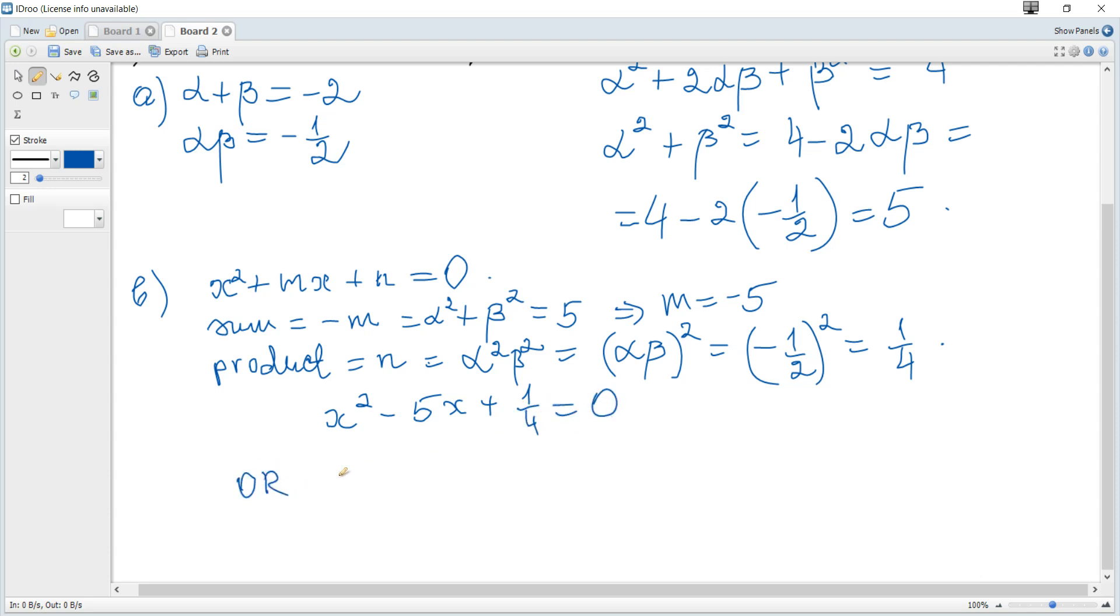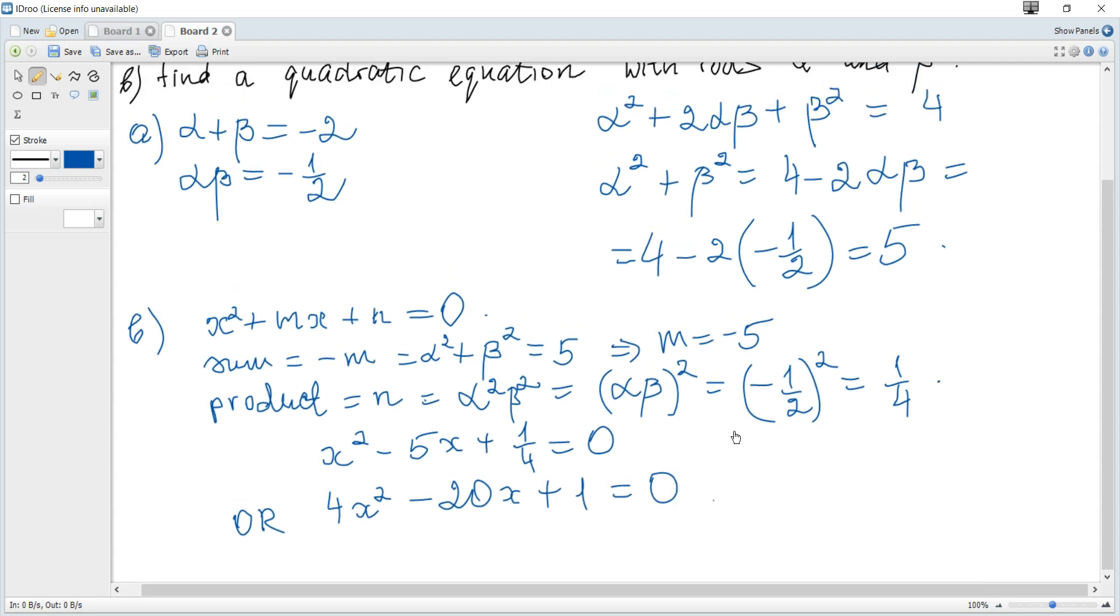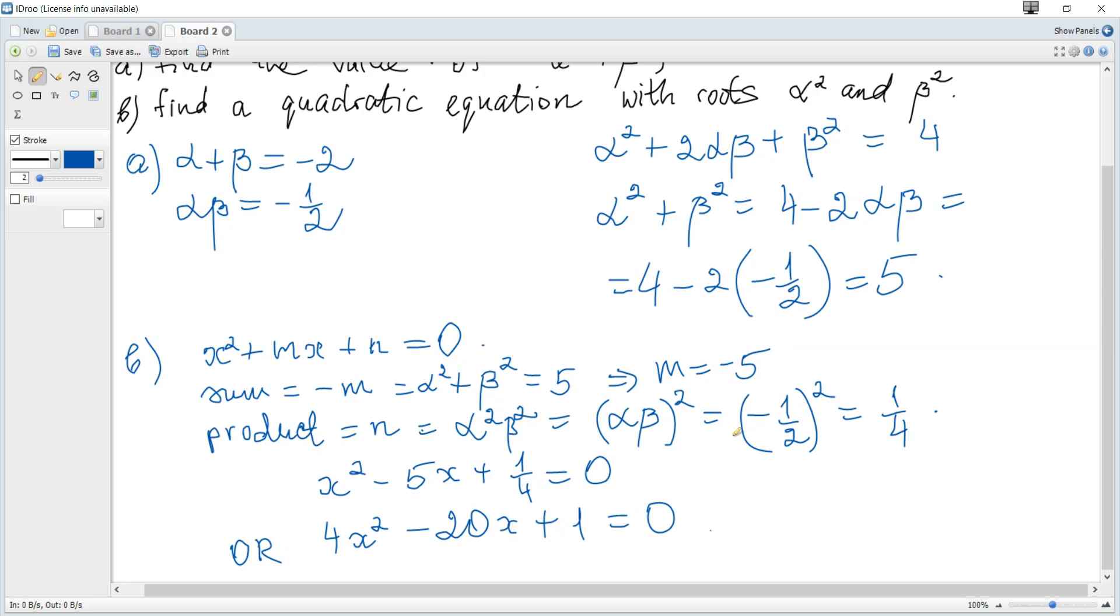Or, we can multiply each term by 4 to get 4x² - 20x + 1 = 0. That's all for this question.